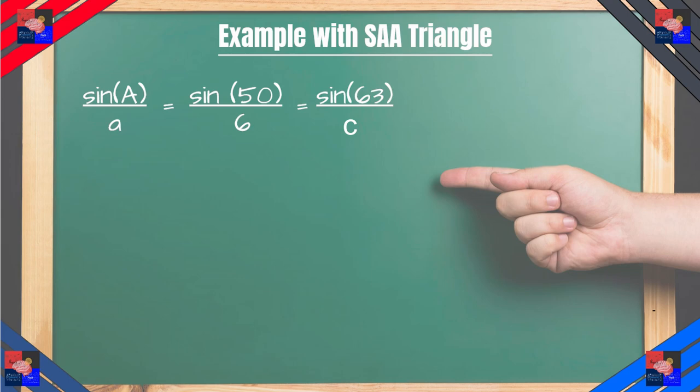So we plug this into the law of sines and we can get A and C lengths using the law of sines. As for the angle we use one of Euclid's axioms that all angles of a triangle add up to 180 degrees. So we work out the angle, we get 67 degrees. Now we have sine of 67 degrees over A is equal to sine of 50 degrees over 6 which is equal to sine of 63 degrees over C.